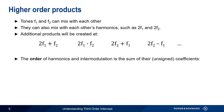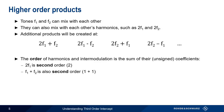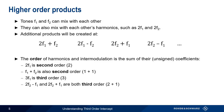We often talk about the order of harmonics and intermodulation products. Order refers to the sum of the unsigned coefficients. For example, 2F1, the second harmonic of F1, is second order. F1 plus F2 is also second order. The third harmonic of F1, 3F1, is third order. And most importantly, 2F2 minus F1, or 2F2 plus F1, are third order products. Let's look at a diagram.